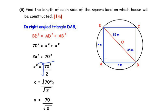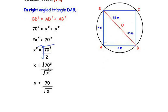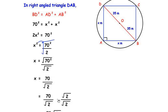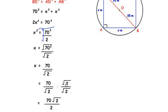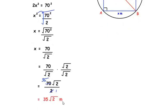So x = 70/√2. We can keep the answer as 70/√2 meters, or rationalize it further. Rationalizing the denominator: 70/√2 × √2/√2 = (70√2)/(√2 × √2) = 70√2/2. Since 2 divides 70 giving 35, we get x = 35√2 meters. Either form is acceptable, but rationalizing to 35√2 is recommended.